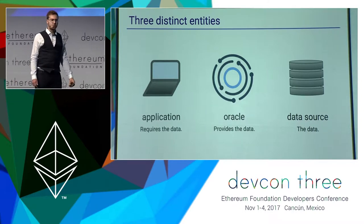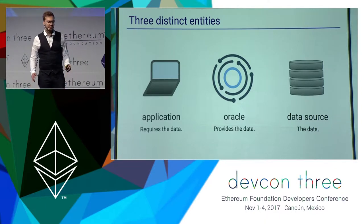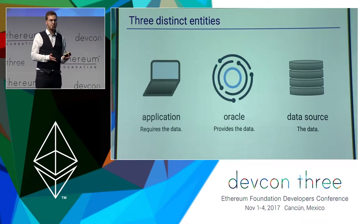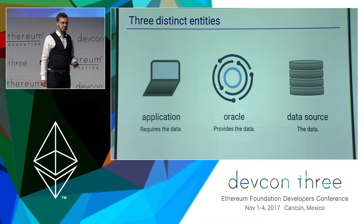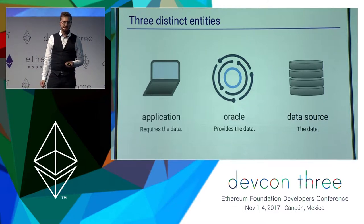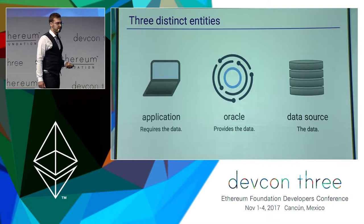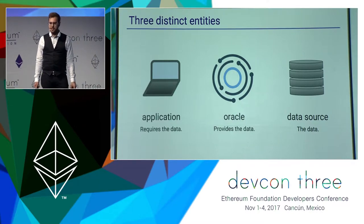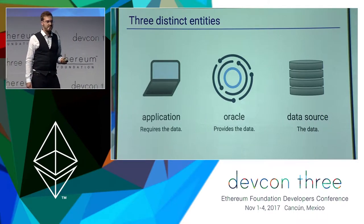It's important to define three different entities, as in different Oracle models some of those are merged. The dApp is any piece of code that requires the external data. Then we have the Oracle and the data source — the data source is not necessarily the same party as the Oracle itself. The Oracle is the party that sends the data to the blockchain, but the data source might be a different party.